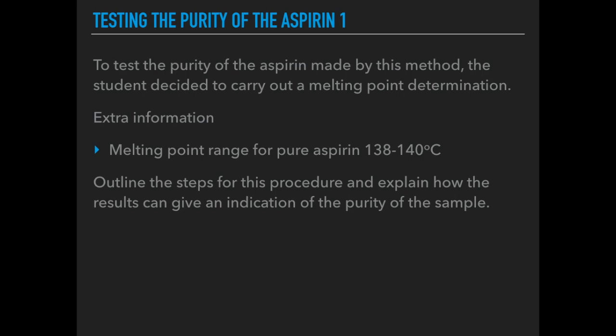Moving on to testing the purity using melting point determination. The student has decided to carry out a melting point determination to determine the purity of the aspirin made. The melting point range for pure aspirin is 138 to 140 degrees Celsius. The task is to outline the steps for the procedure and explain how the results can give an indication of the purity of the sample.